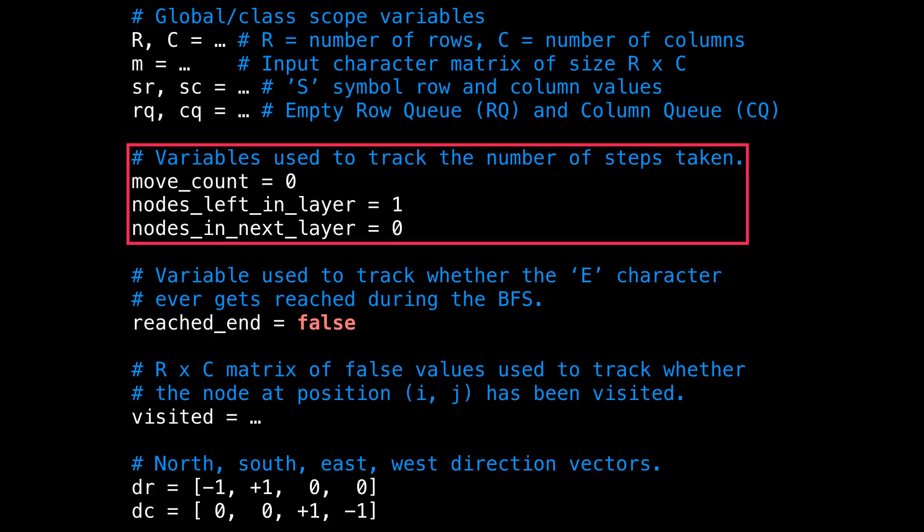This next set of variables is to keep track of the number of steps taken to reach the exit. move_count will actually track the number of steps taken. nodes_left_in_layer tracks how many nodes we need to dequeue before taking a step, and nodes_in_next_layer tracks how many nodes we added in the breadth-first search expansion so that we can update nodes_left_in_layer accordingly.